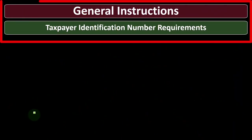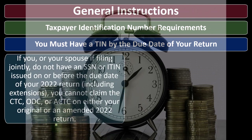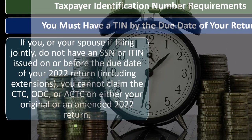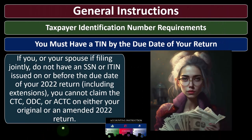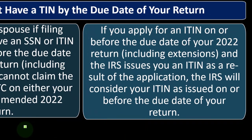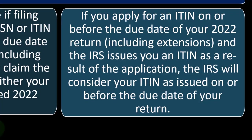General instructions: taxpayer identification number requirements. You must have a TIN by the due date of your return. If you or your spouse filing jointly do not have an SSN or ITIN issued on or before the due date of your 2022 return, including extensions, you cannot claim the CTC (Child Tax Credit), ODC (Other Dependent Credit), or ACTC (Additional Child Tax Credit) on either your original or amended 2022 return. If you apply for an ITIN on or before the due date and the IRS issues one, the IRS will consider it as issued on or before the due date.